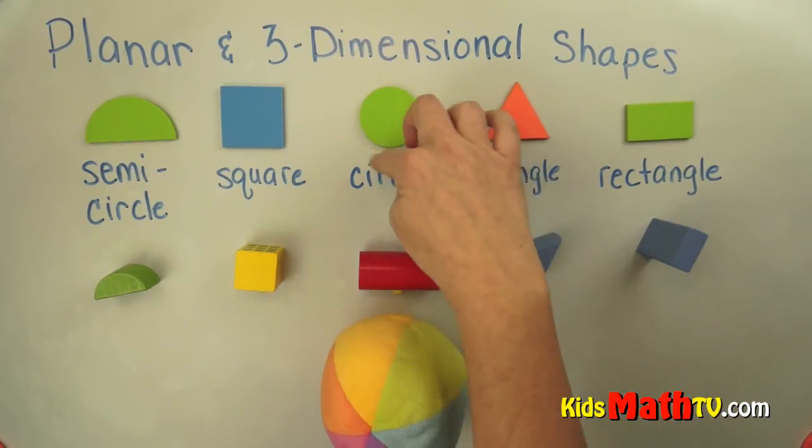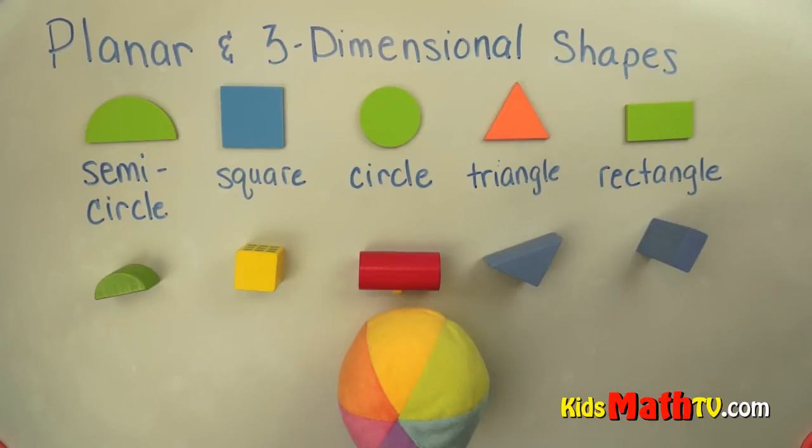This would be a sphere, okay, also has the circular shape to it. And that's the end of our lesson on planar and three-dimensional shapes.